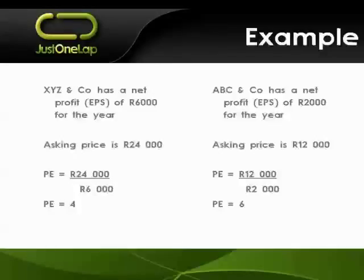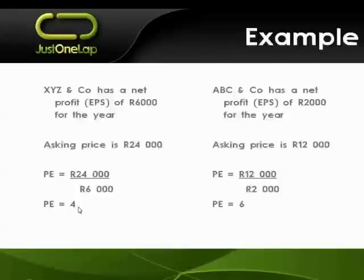Another example with companies XYZ and ABC: XYZ makes a profit of 6,000 versus ABC's 2,000, but you can buy XYZ for 24,000 versus 12,000 for ABC. At first glance, XYZ looks twice as expensive, but the PE tells a different story: 24,000 divided by 6,000 gives XYZ a PE of 4, while ABC at 12,000 divided by 2,000 gives a PE of 6. Although you're paying a higher price for XYZ, you're getting much better value — double the price, but three times the profit. The lower PE indicates that is better value.